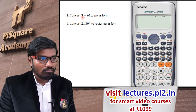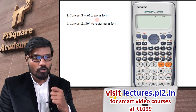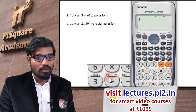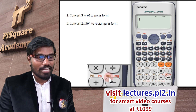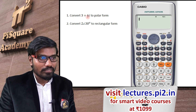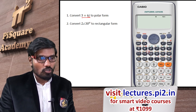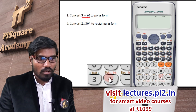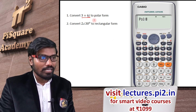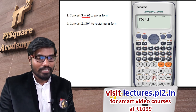I want to convert 3 plus 6i into polar form. How do I do that? See this button — Pol, polar-rectangular. This is already in rectangular form and I want it in polar form. So go for Pol. I'll press Shift, then Pol, and enter 3.